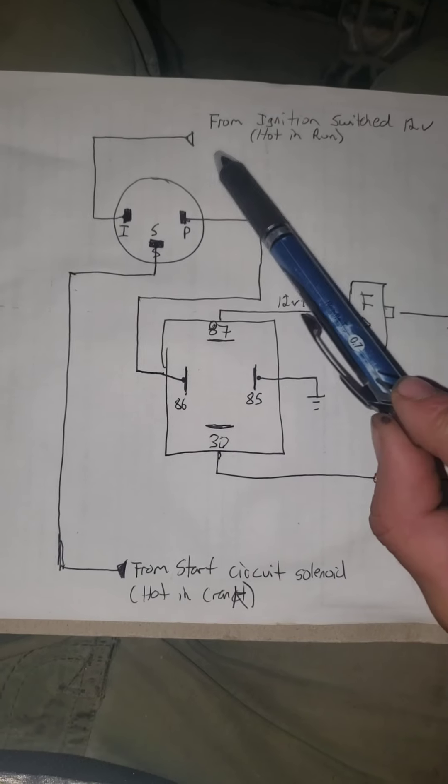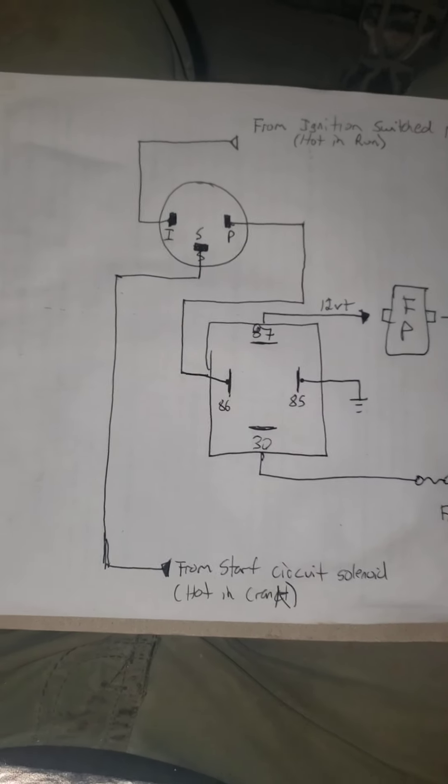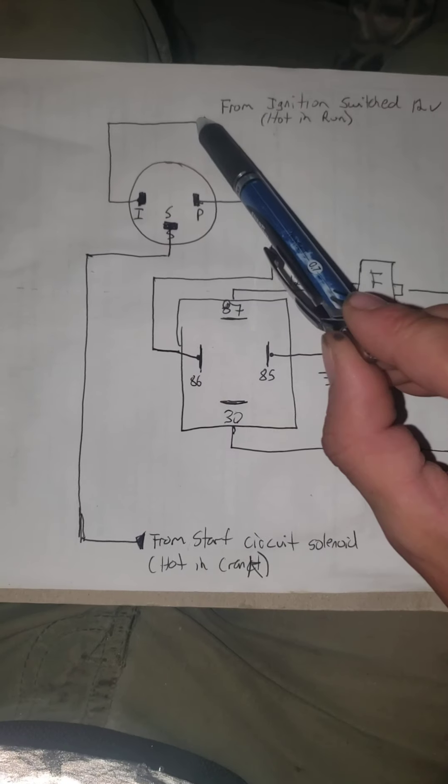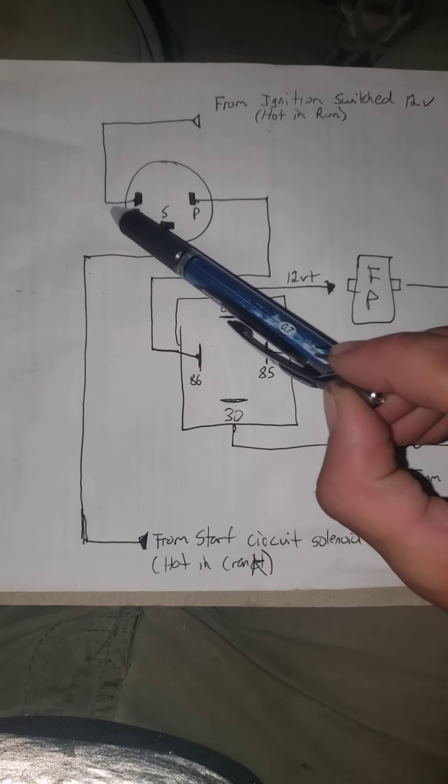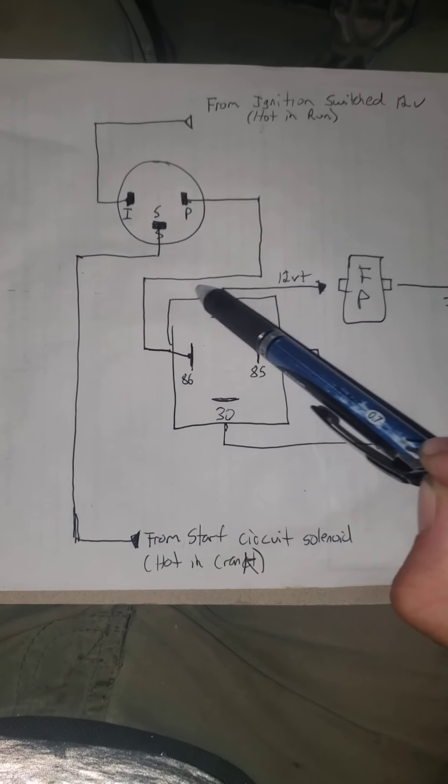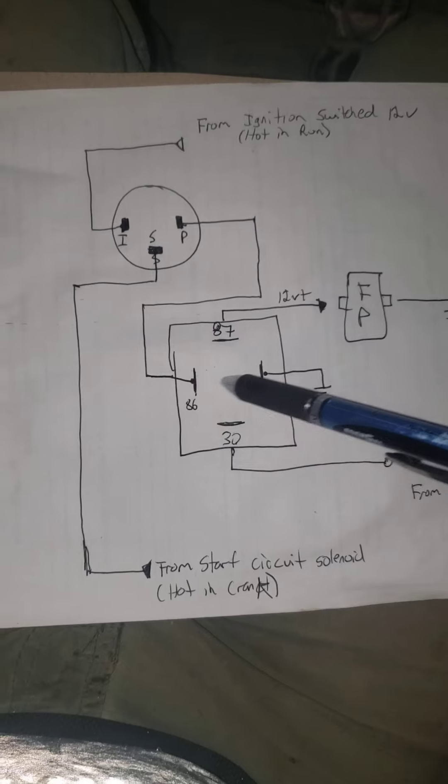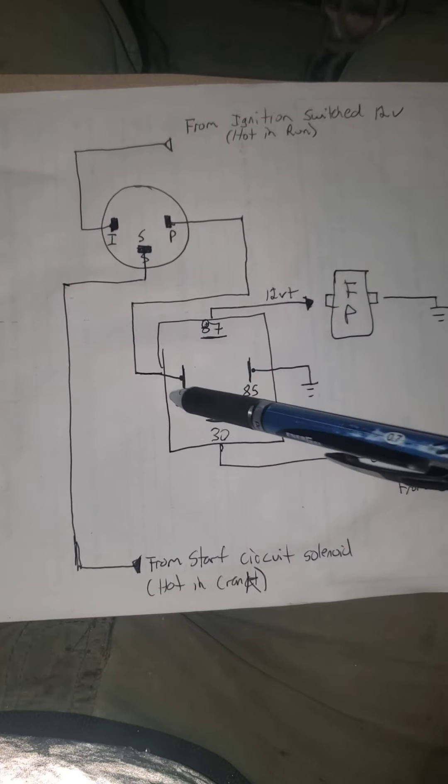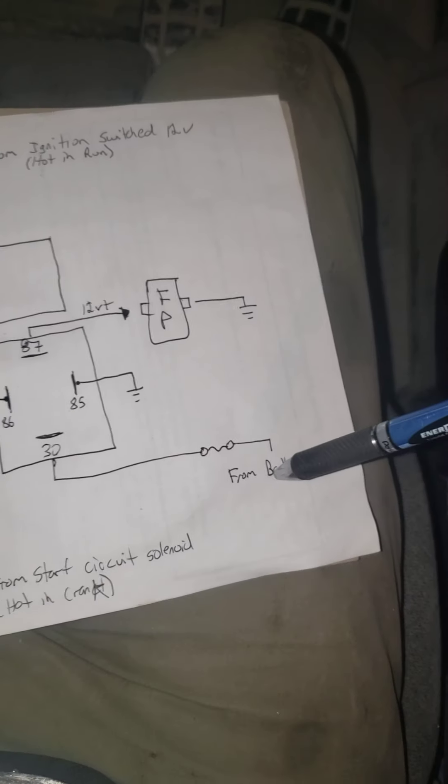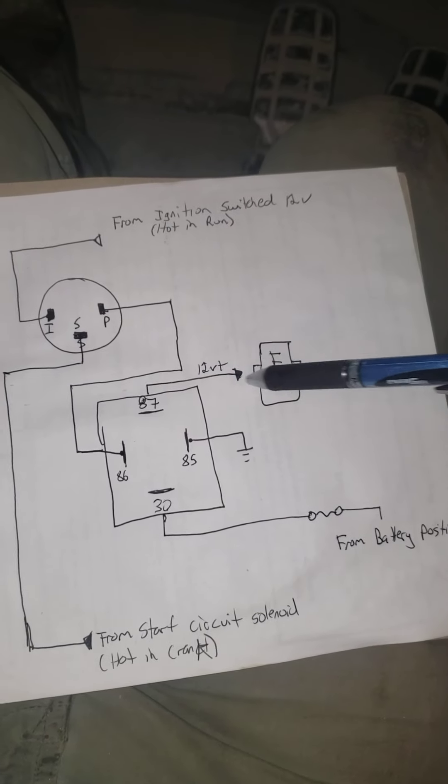Now your engine's running, you have current going from your ignition source through your ignition switch. These two contacts are now connected. Same thing comes down to your relay. 86 and 85 are your actuating circuit, and that connects your power straight from your battery and into your fuel pump.